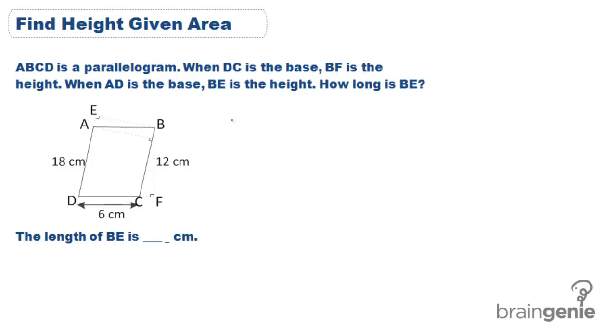The first thing we're going to do is find the area. Because we know the area when we know both the base and the height, we are going to need to use DC and BF to immediately solve. So here we have area is equal to DC which is 6 centimeters times BF which is 12 centimeters. That gives us 72 centimeters.